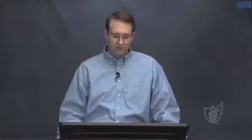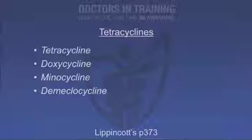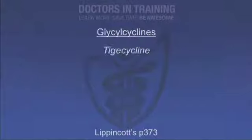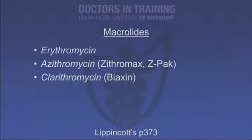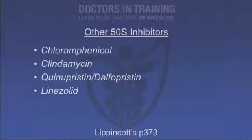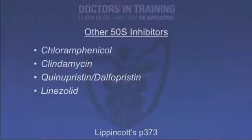Protein synthesis inhibitors include a wide range of antibiotics. Tetracyclines include tetracycline, doxycycline, minocycline, and demeclocycline. The glycylcycline we'll discuss is tigecycline. Aminoglycosides include gentamicin, neomycin, amikacin, tobramycin, and streptomycin. The macrolide/ketolide category includes erythromycin, azithromycin, and clarithromycin. Four other medications are chloramphenicol, clindamycin, quinupristin/dalfopristin, and linezolid.